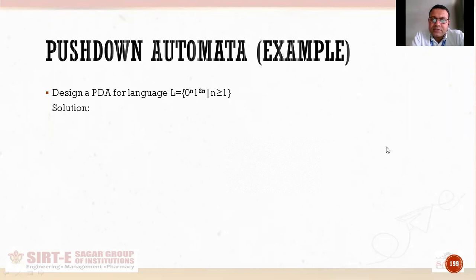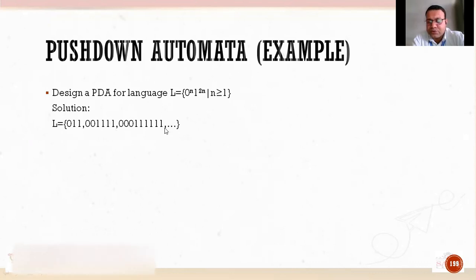If you look at the number of zeros, the double number of ones are followed by zeros. Double number of ones will appear. So suppose if there is one zero in this string, two ones will follow it. If there are two zeros in our string, then four ones will follow it, and so on. This is how strings will appear in this language set.